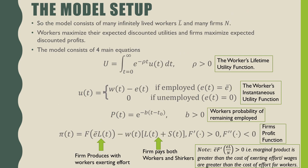The model consists of many infinitely lived consumers, L, and many firms, N. Workers maximize their expected discounted utilities while firms maximize their expected discounted profits.